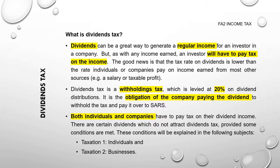When dividends are distributed by a company, it is the shareholders who bear or have to pay the tax on that dividend income. However, it is the responsibility of the company that distributes or declares the dividends to withhold the tax portion on the dividends and then pay it over to the revenue service on behalf of the shareholders. This is very similar to employees' tax, where the employer withholds the income tax portion from an employee's salary or wage and pays it over to the revenue service on behalf of the employee.